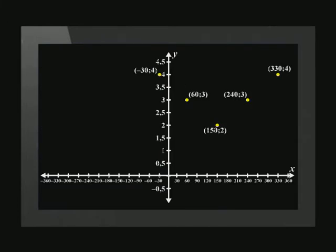We join the points and get this graph. Notice that it's only been drawn between negative and positive 360 degrees on the x axis.